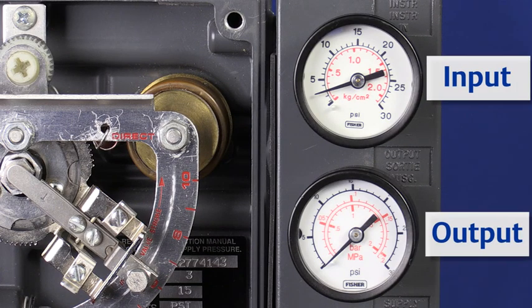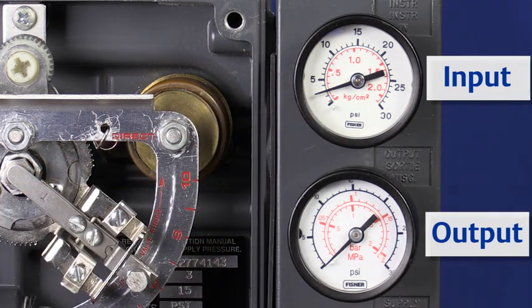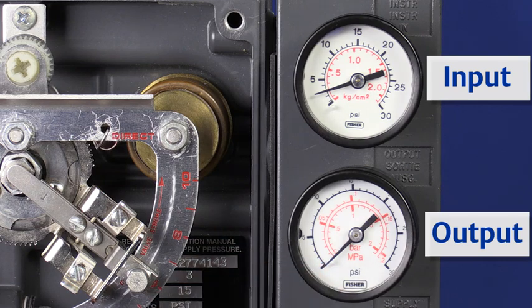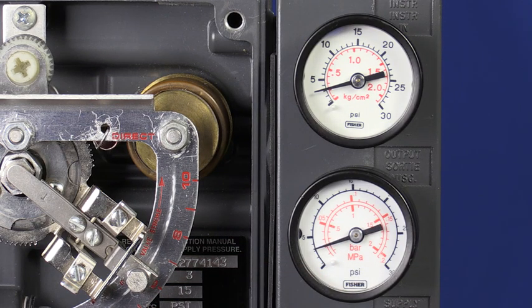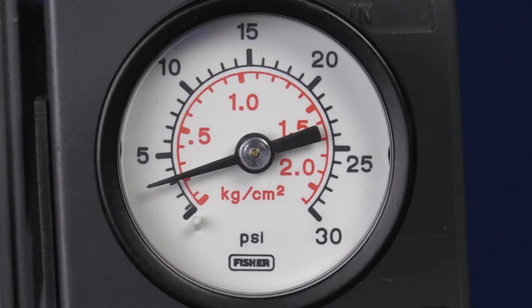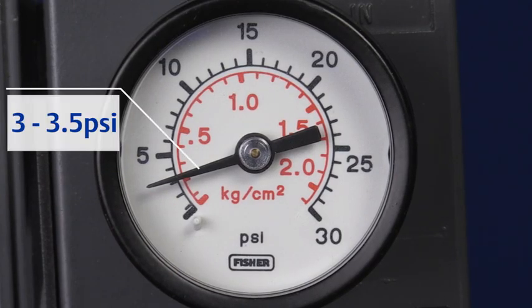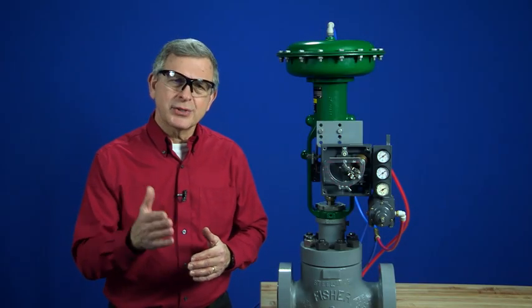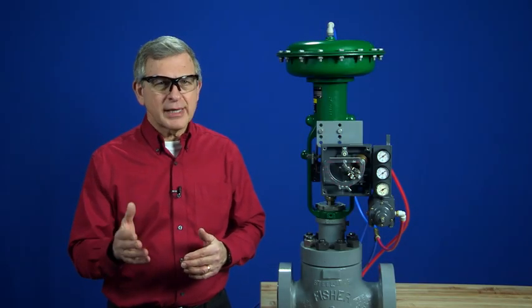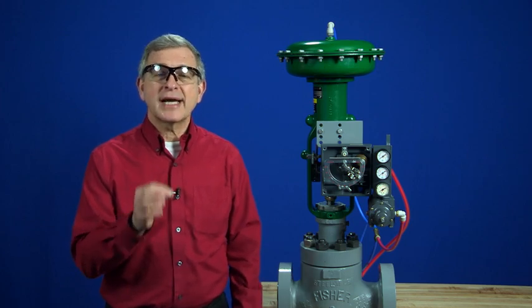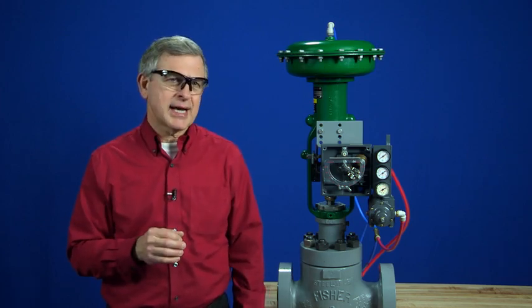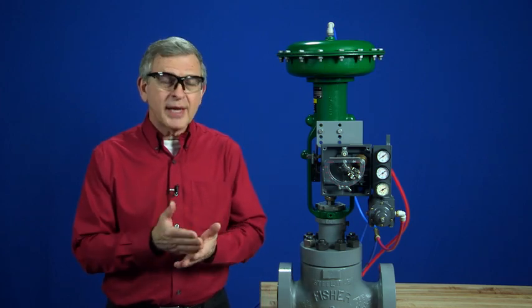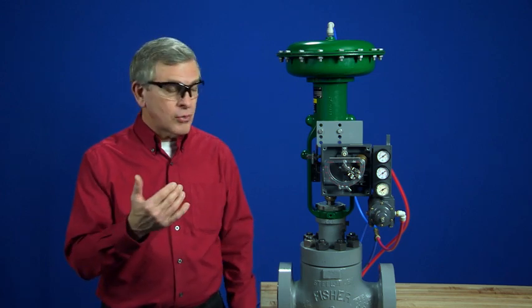Step four is to slowly increase the input pressure while watching the output pressure gauge. As soon as the output gauge needle moves, I stop the input and look at the input gauge. Ideally, it should be somewhere between three and three and a half psi. This technique makes certain that when the input is at three, the positioner output is saturated to zero psi, and the control valve is at one end of its travel, in this case, all the way open.